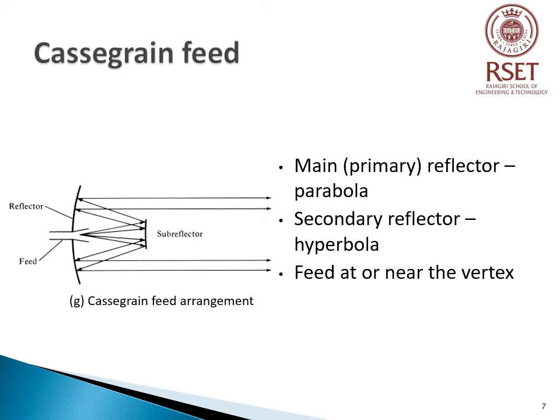An arrangement that avoids placing the feed at the focal point is the Naranth-Cassegrain feed arrangement. Through optics, a famous astronomer called Cassegrain showed that incident parallel rays can be focused to a point by utilizing two reflectors. To accomplish this, the main or primary reflector must be a parabola, the second reflector a hyperbola, and the feed placed along the axis of the parabola, usually at or near the vertex. The operation can be in transmitting or receiving mode. The figure shows the transmitting mode, where the rays from the source placed at or near the vertex illuminate the sub-reflector and are reflected by it in the direction of the primary reflector, as if they originated at the focus of the parabola. The rays are then reflected by the primary reflector and are converted to parallel rays.